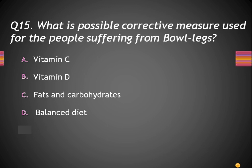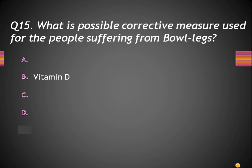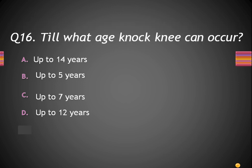The next question: What is a possible corrective measure for people suffering from bow legs? Option A, vitamin C; B, vitamin D; C, fat and carbohydrates; and D, balanced diet. People suffering from bow legs should take vitamin D in their food because vitamin D helps the bones become stronger. So B is the right answer.